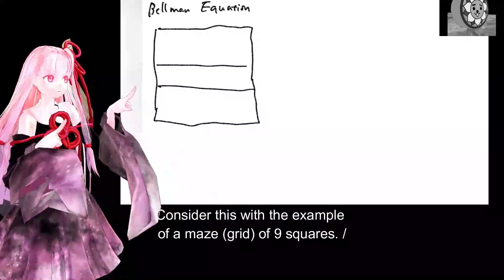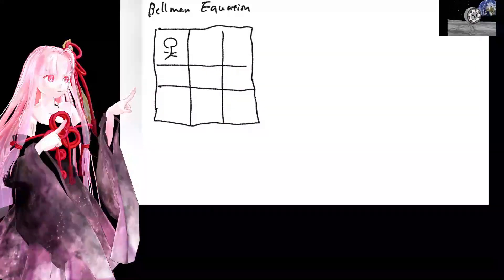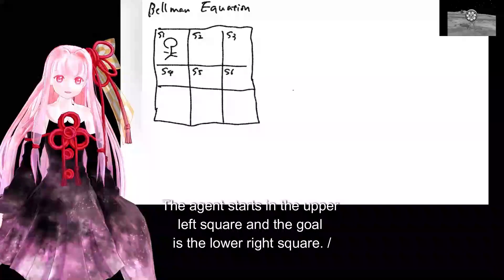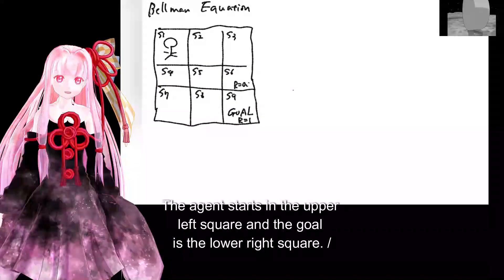Consider this with the example of a maze, grid of 9 squares. The agent starts in the upper left square and the goal is the lower right square.